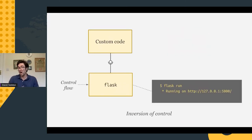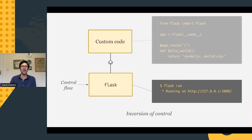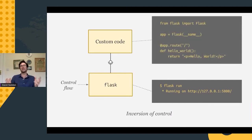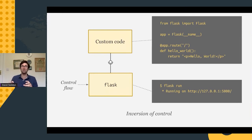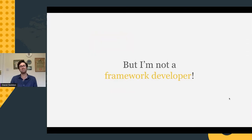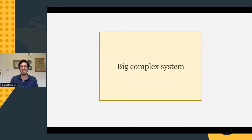Here's an example with Flask, a web development framework. We run Flask so control flows with Flask, yet we have custom code that configures it to know where to route web requests. Most of us are used to working with frameworks, but perhaps not used to writing inversion-of-control mechanisms ourselves. You might say: I'm not a framework developer — why do I need to care about inversion of control?